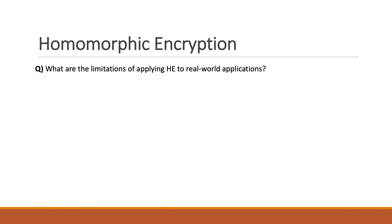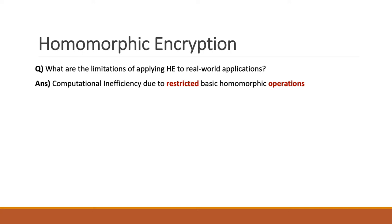In this perspective, one may think homomorphic encryption is a perfect solution for privacy concerns in real-world applications and might say: let's encrypt everything with homomorphic encryption, then we are done. We hope so, but there always exists a gap between theory and practice. One of the most troublesome points is the computational inefficiency due to the restricted basic operations.